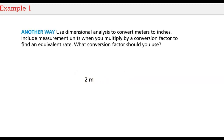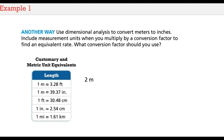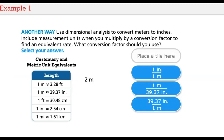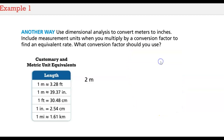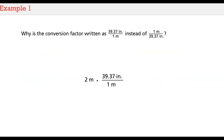Here is another way: use dimensional analysis to convert meters to inches. Include measurement units when you multiply by a conversion factor to find an equivalent rate. What conversion factor should you use? Why is the conversion factor written as 39 and 37 hundredths inches over 1 meter instead of 1 meter over 39 and 37 hundredths inches?